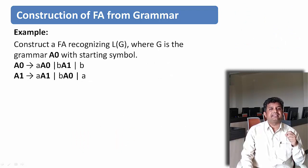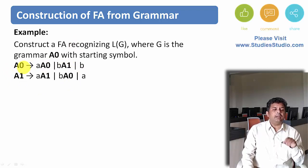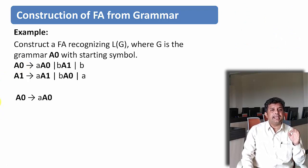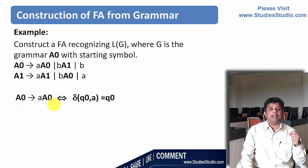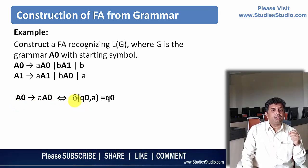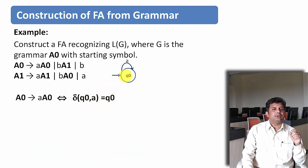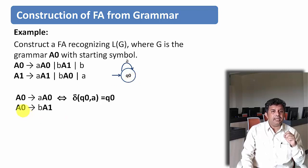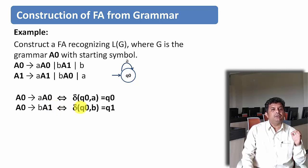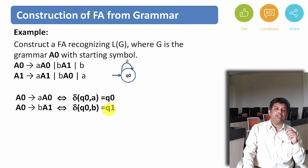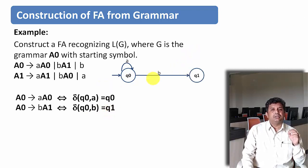Let us try to understand this with the help of an example. Here a grammar is given where A0 is the starting symbol. We want to construct a finite automata, so let us take each production one by one. The first one is A0 derives A A0. As per rule 1, we need to keep a transition from Q0 on input symbol A to Q0. So on Q0, there is a transition A again to Q0. The second production is A0 derives B A1, which means there is a transition from Q0 on input symbol B to state Q1.